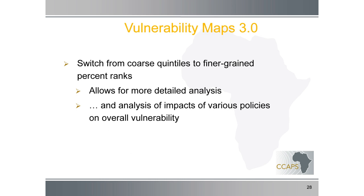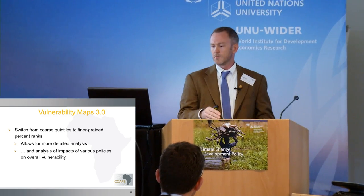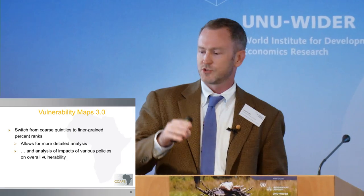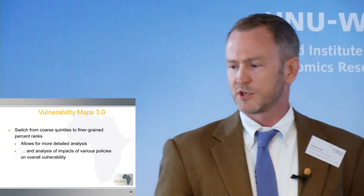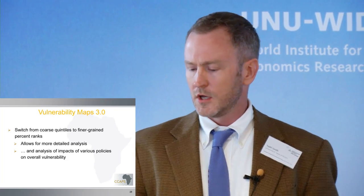We're also trying to switch from using just quintiles — which is just one, two, three, four, and five — to much more fine-grained percent ranks. So we have down to a hundred degrees of difference rather than just five. This allows for much more detailed analysis and much better analysis on the impacts of what happens when you play with one policy — when you try to improve health indicators in one country, what does that do to the overall vulnerability?